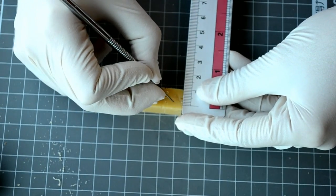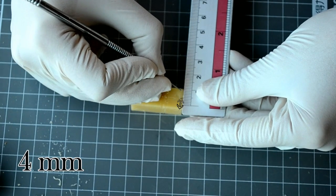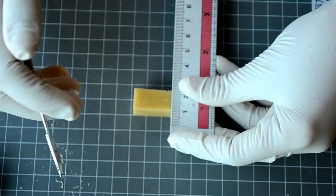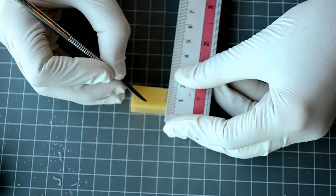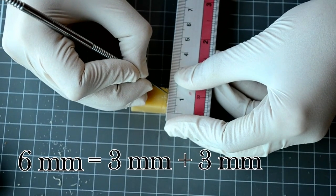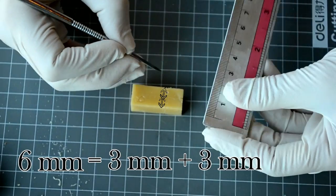For the mesial distal dimension of the crown, mark 4 mm on each side of the central line at the incisal edge. This adds up to 8 mm. The mesial distal dimension of the crown at the cervical portion is 6 mm. Carve this by following the previously mentioned technique and plot 3 mm on each side of the vertical line.